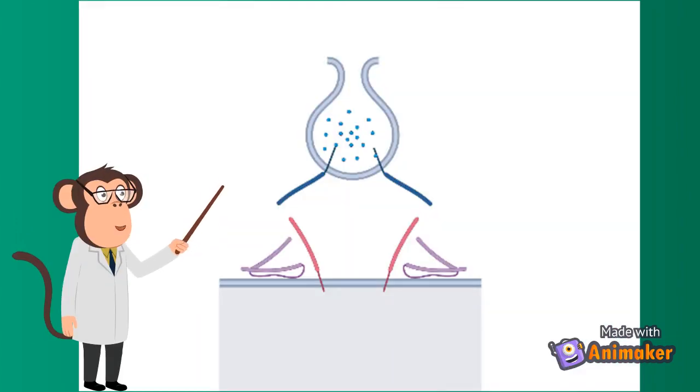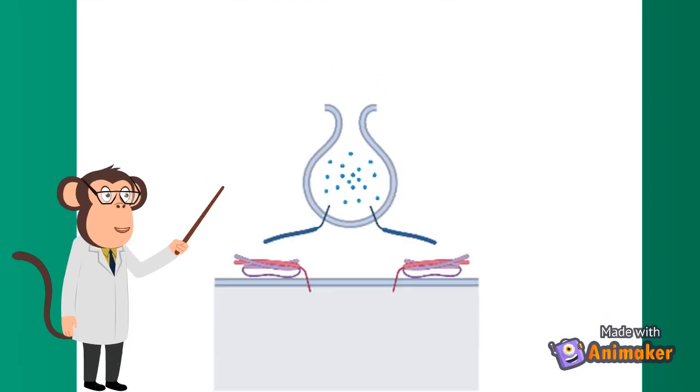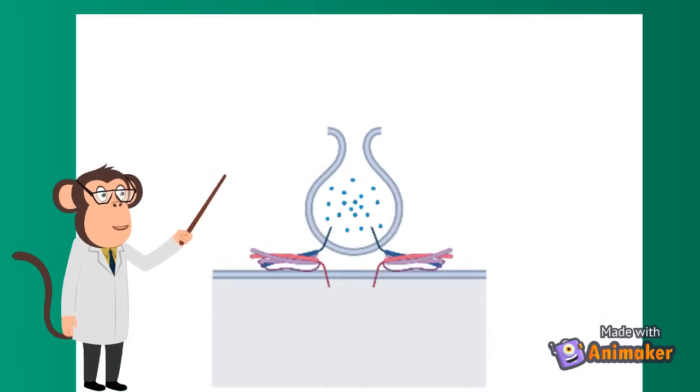The actual fusion of a vesicle to the membrane is the result of the snare complex physically pulling the two phospholipid bilayers together.